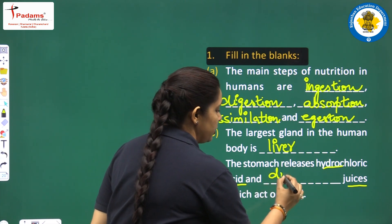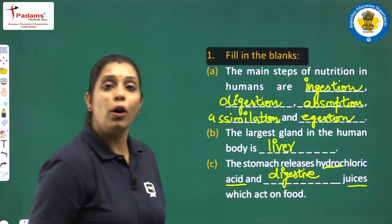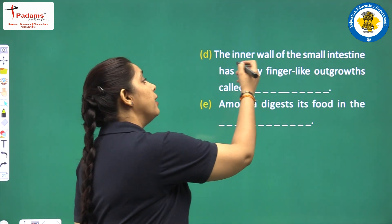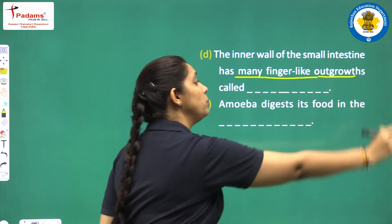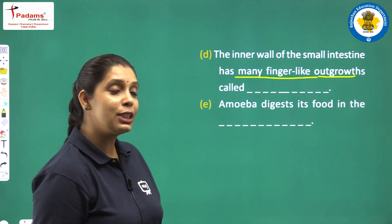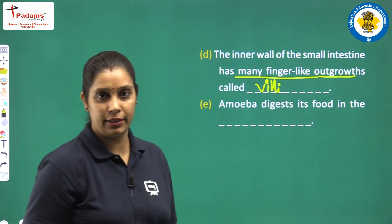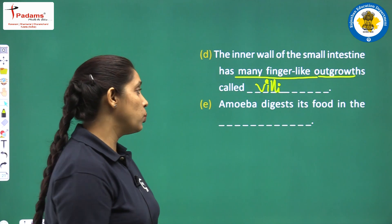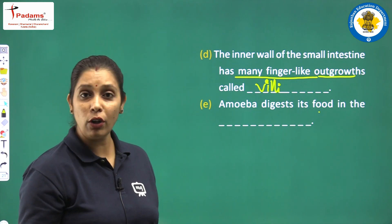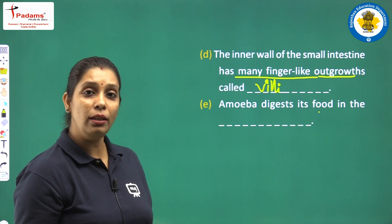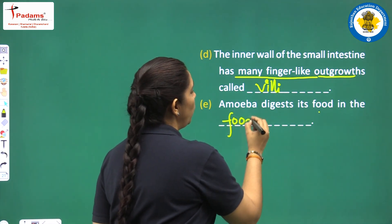We have to fill in digestive juices. Come on to the next one. The inner wall of small intestine has many finger-like outgrowths and we know they are known as villi (plural: villi). Next one: amoeba digests its food — no specific organ is there, only a single part. It is the food vacuole.